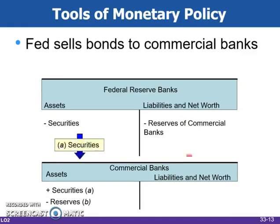If the Fed sells government bonds to commercial banks, the opposite effect occurs. The banks lose reserves, which will reduce their lending capacity.